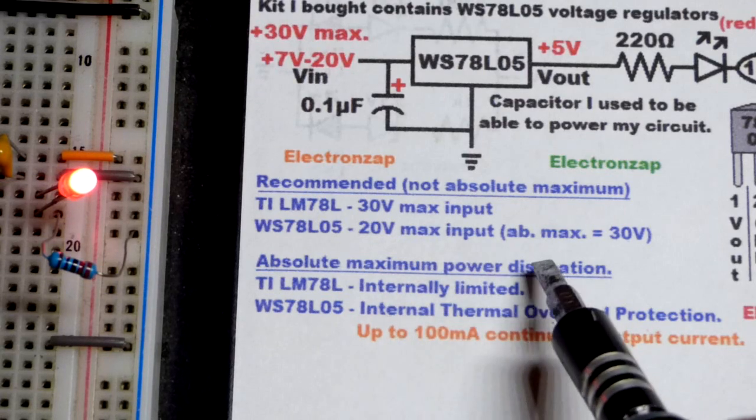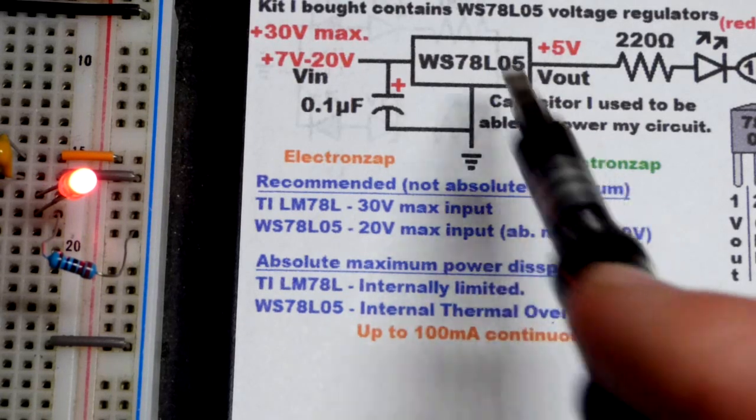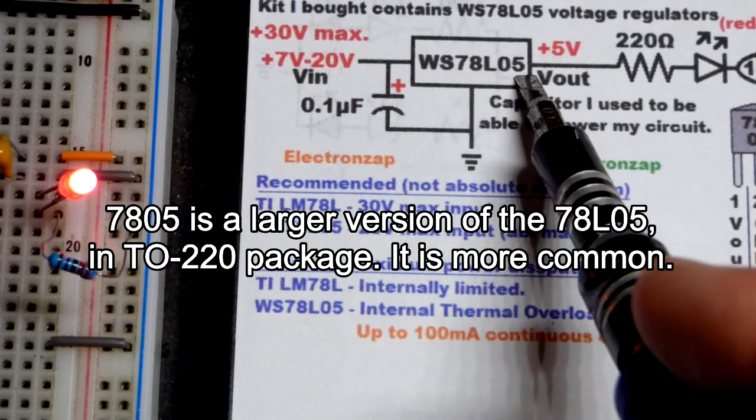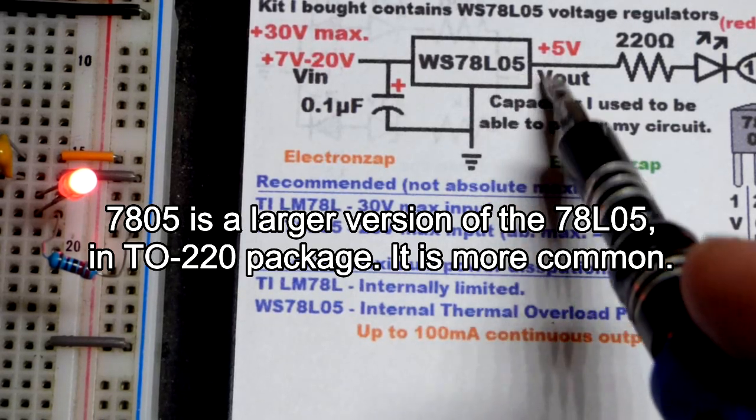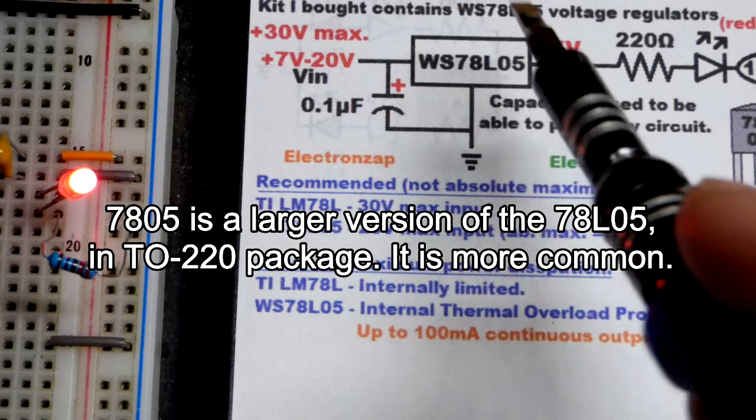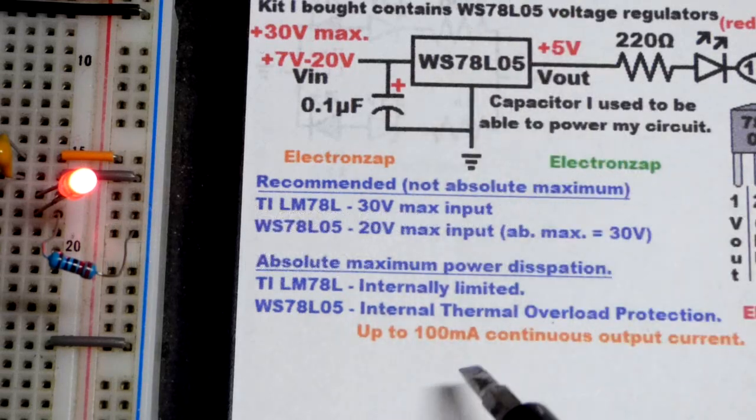Which means you should not be able to overpower it. It should protect itself. The 7805 that I tested in the past, they limited current. They dropped voltage in order to prevent themselves from getting any hotter once they got hot enough.